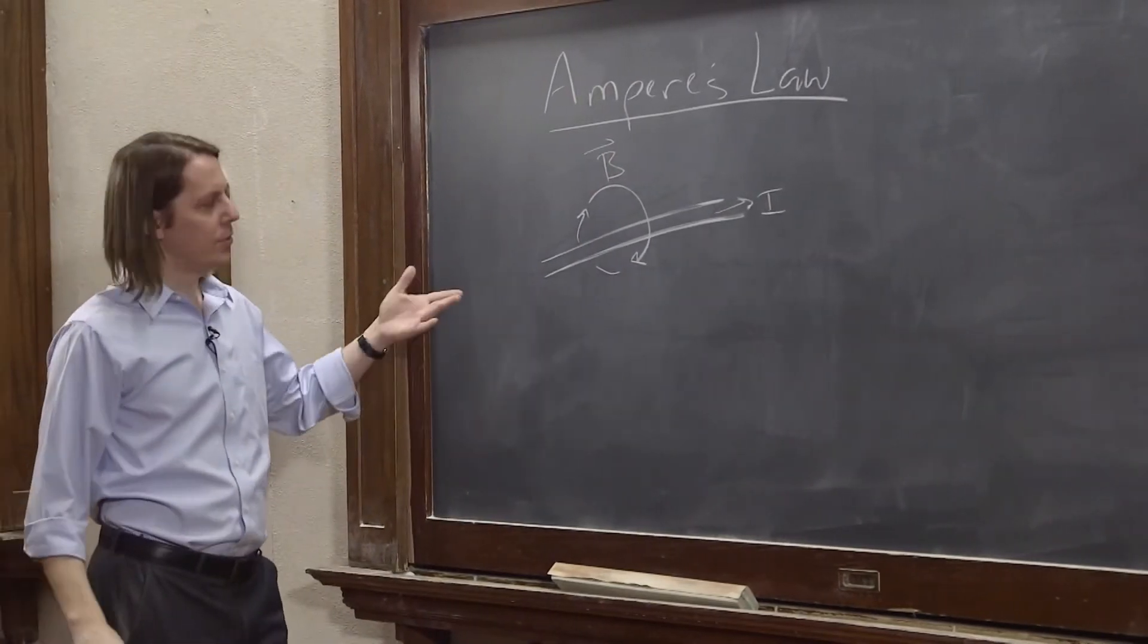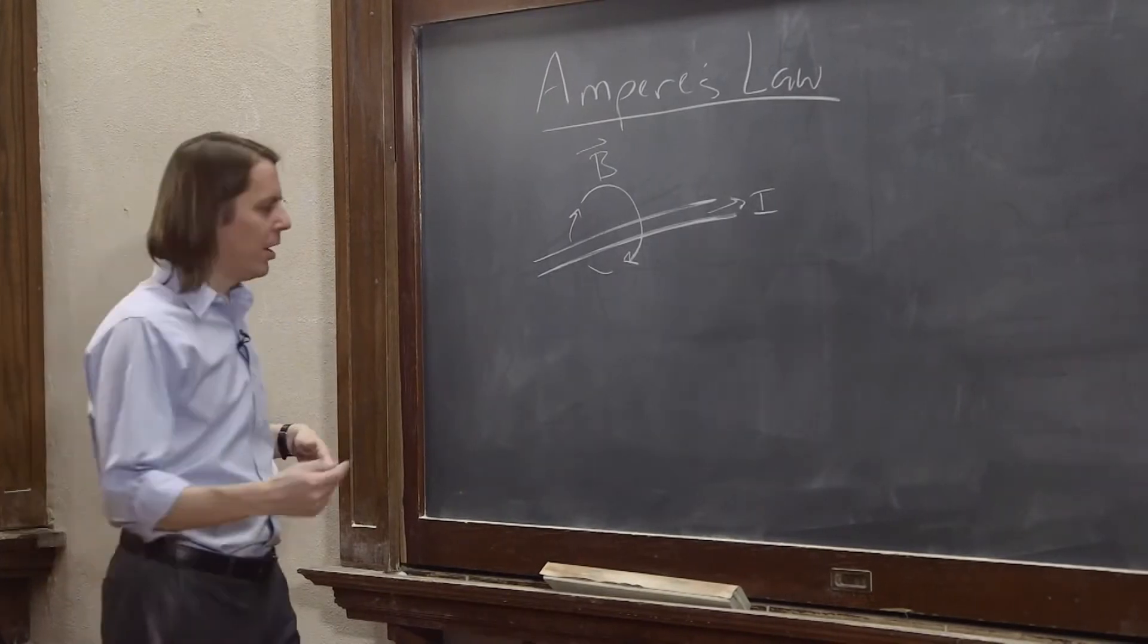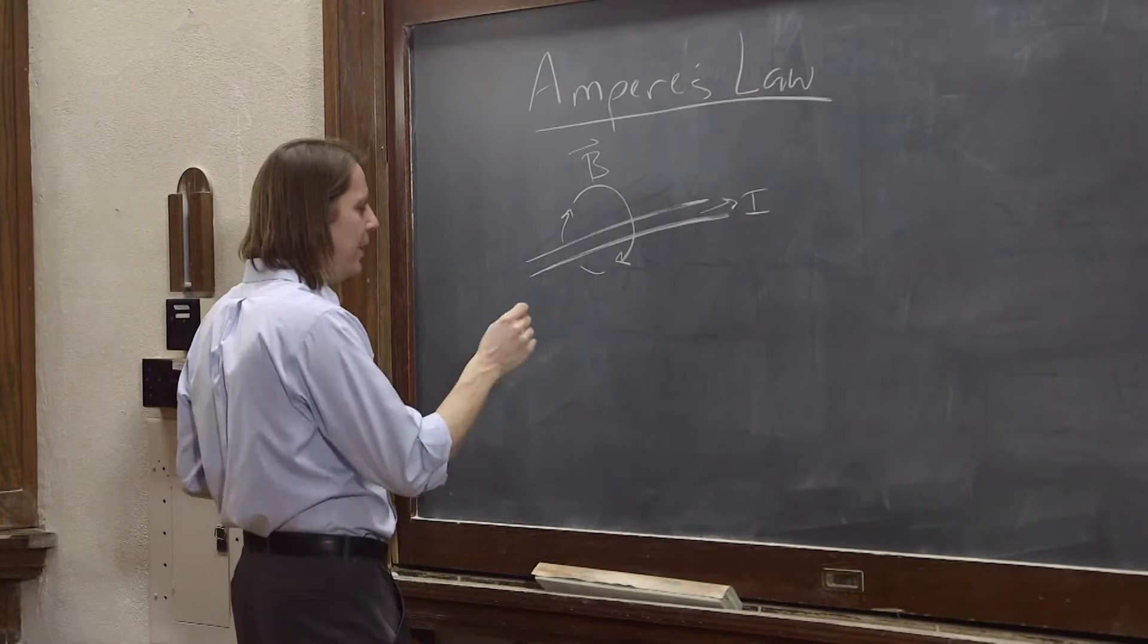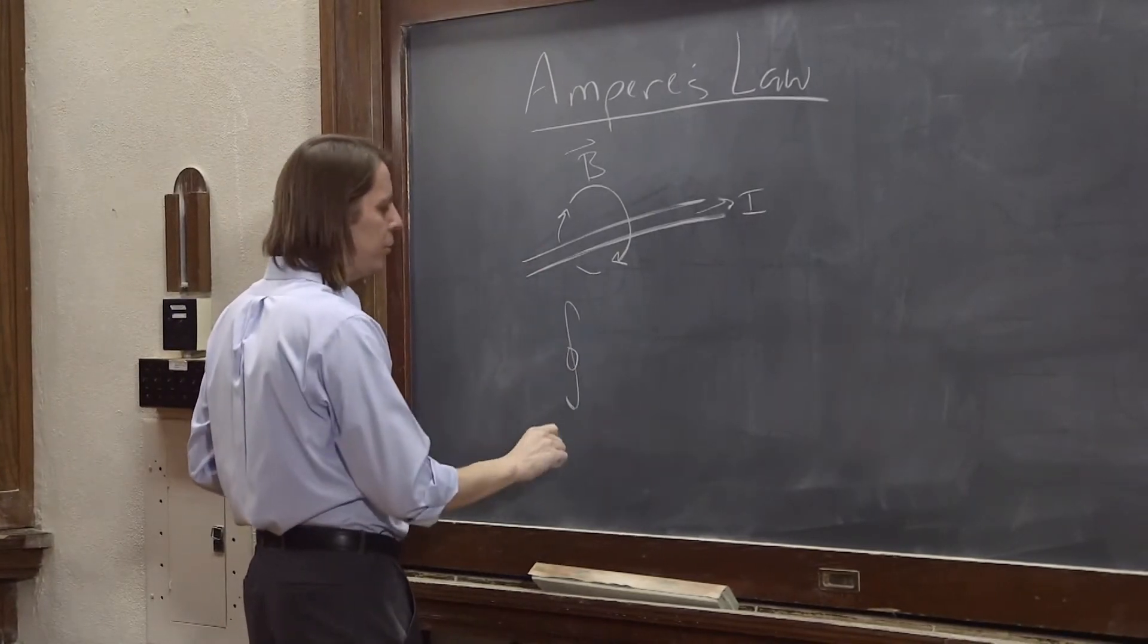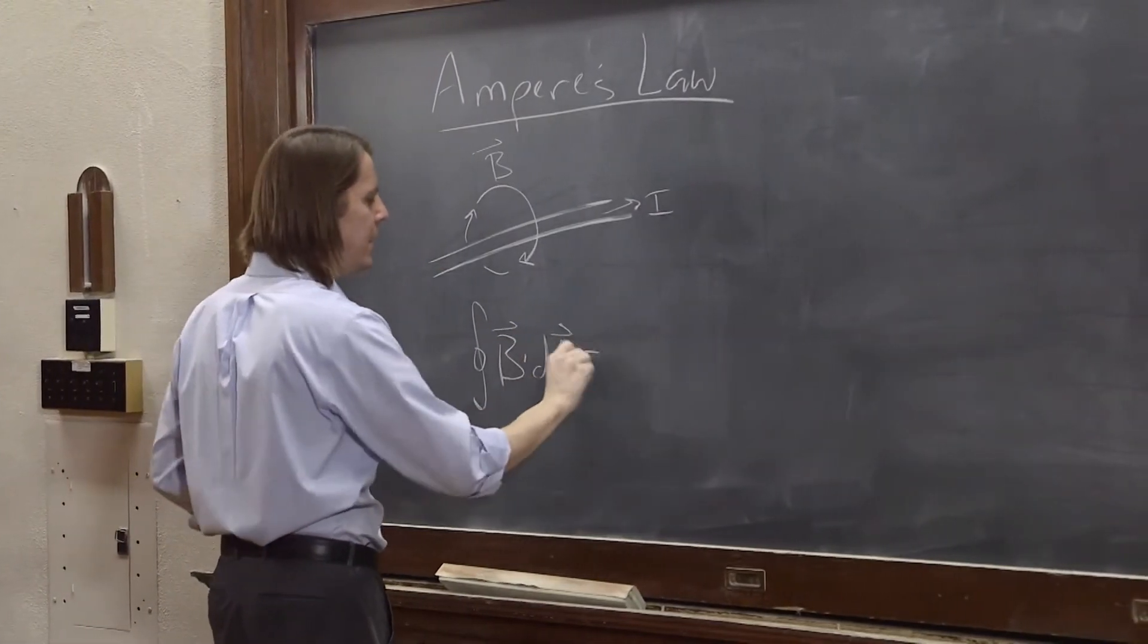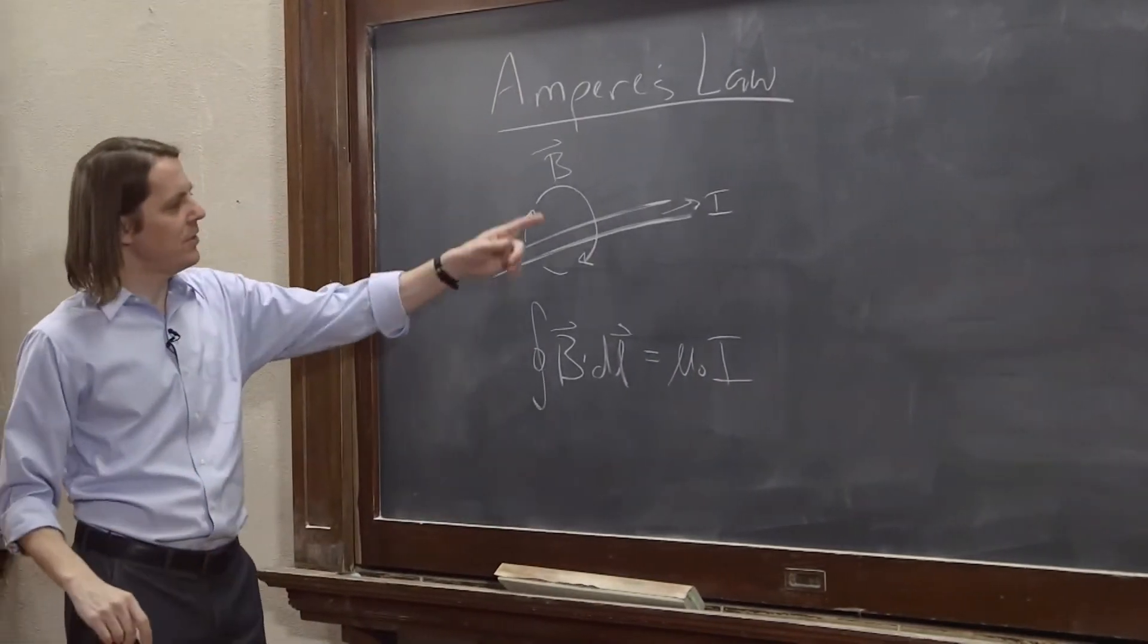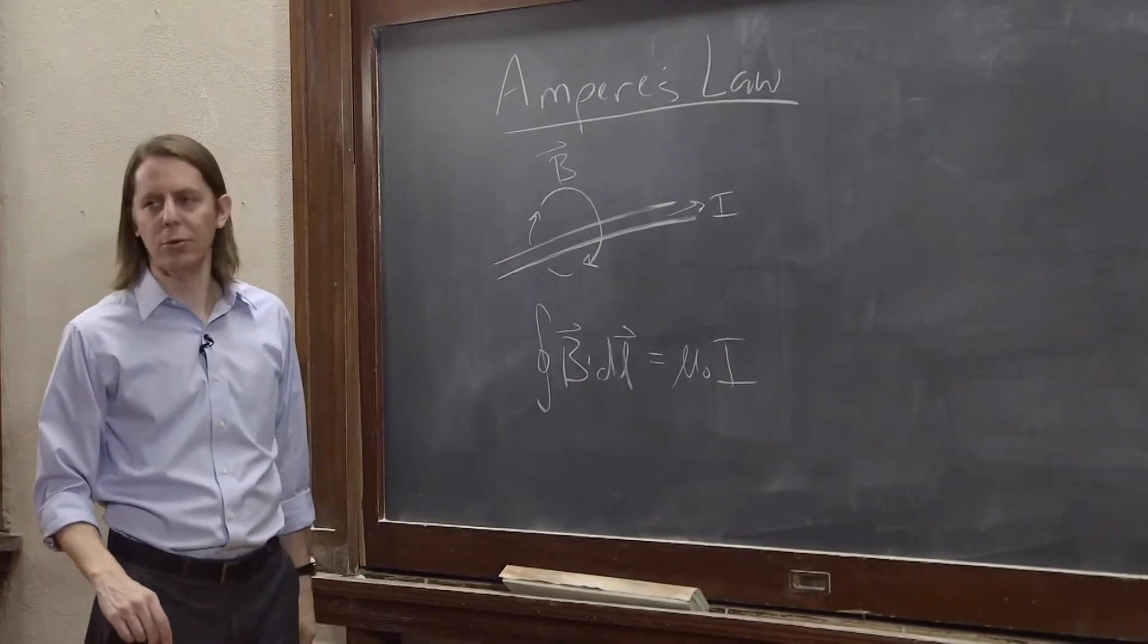And with Ampere's Law, we could always describe a field like this, the fact that you have these circulating B fields around wires by doing a line integral around the wire. And the general statement of Ampere's Law is the integral around some closed loop of B dot DL was equal to basically mu naught times I, where B is a path you choose and I is the current that penetrates the loop.